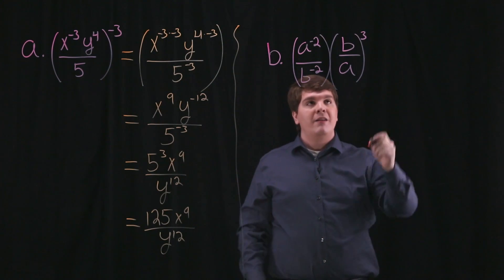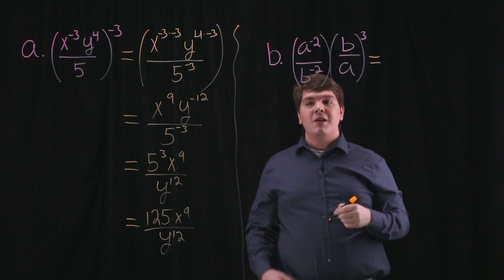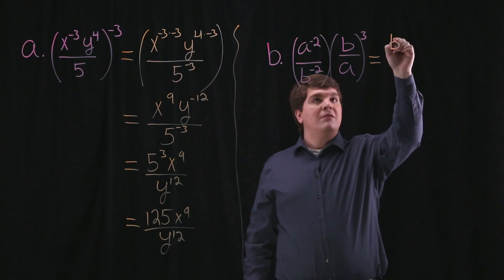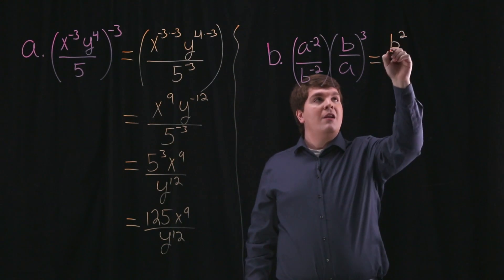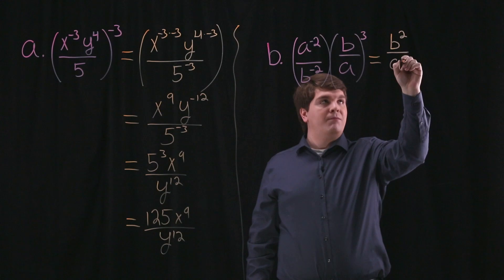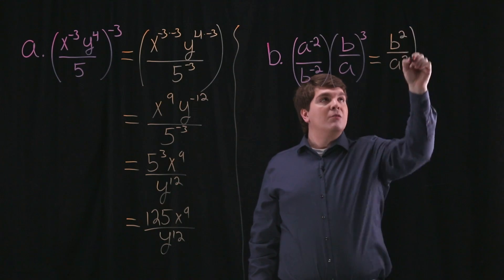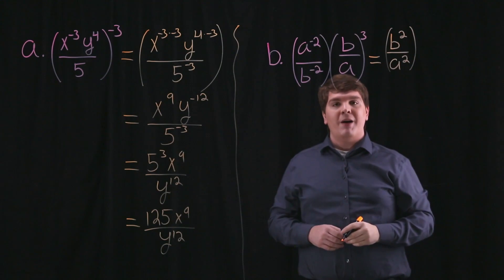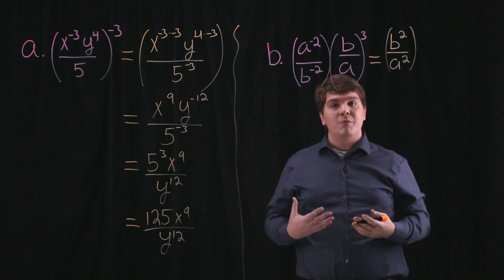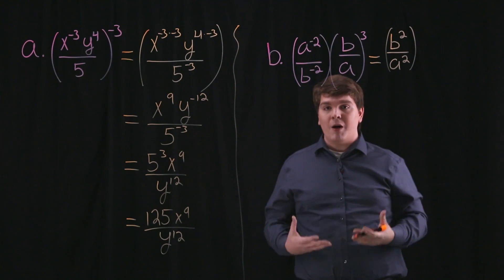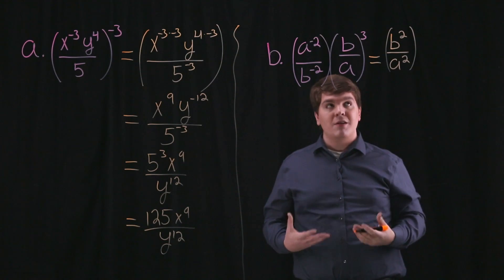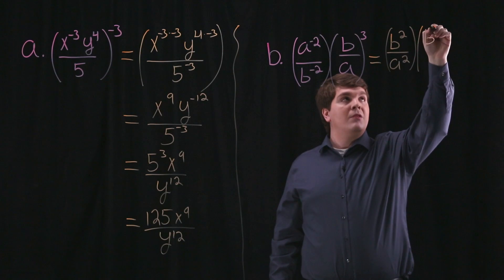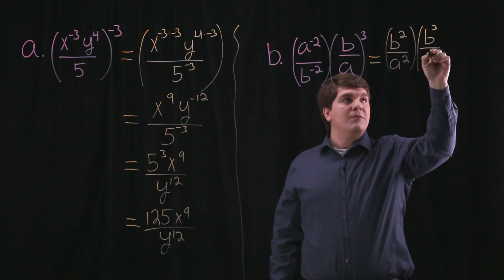We can go ahead and use our properties of exponents and rewrite this as b squared divided by a squared. We're still multiplying this by b divided by a cubed, but again we can use our properties of exponents to write this as b cubed divided by a cubed.